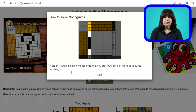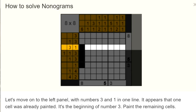Rule number 1: always paint only those cells that you are 100% sure of. No need to guess anything. Moving on to the left panel with the numbers 3 and 1: that means first there will be 3 cells painted in, then at least 1 space but maybe more, and then 1 cell painted in. Since the first number is 3 and we already have 1 cell painted in, I can paint the remaining cells so that there are 3 cells painted in.